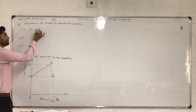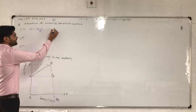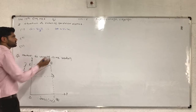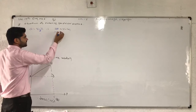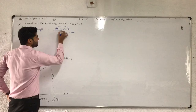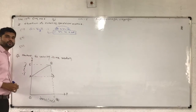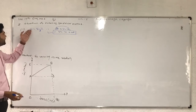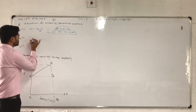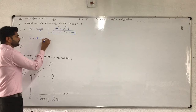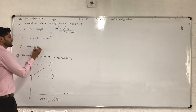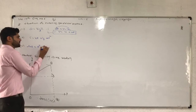The first equation: A is equal to V minus U divided by T, therefore AT is equal to V minus U, and V is equal to U plus AT. So the first equation is V equals U plus AT. The second equation is S equals UT plus half AT squared. The third equation is 2AS equals V squared minus U squared.